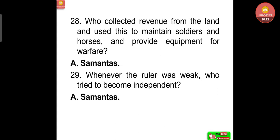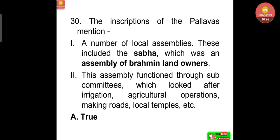Who collected revenue from the land and used it to maintain soldiers, horses, and equipment for warfare? They were the samantas. Whenever the ruler was weak, the samantas tried to become independent. The inscriptions of the Pallavas mention a number of local assemblies, including the Sabha — an assembly of brahmin landowners.